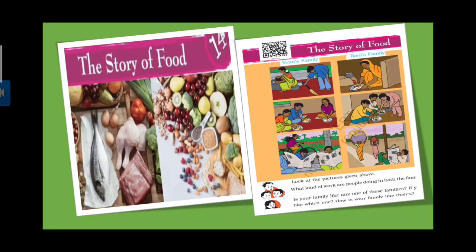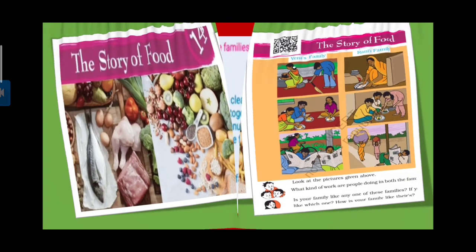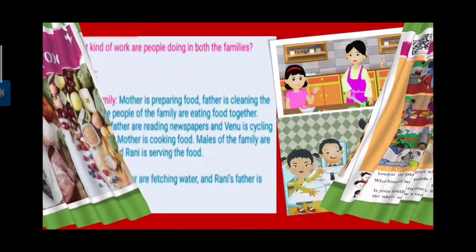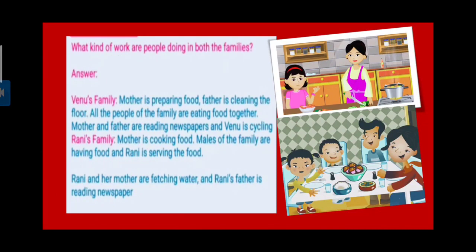Rani's mother is working on the newspaper. Then Weenu's family with her father doing different types of work. They are all working on the food. But in Rani's family, she is only cooking.